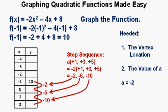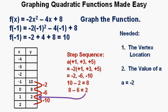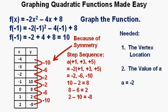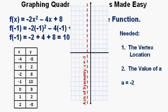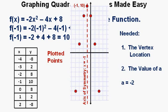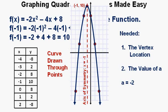Applying the step sequence: 10 minus 2 equals 8, 8 minus 6 equals 2, and 2 minus 10 equals negative 8. Because of symmetry, the sequence of negative 2, negative 6, negative 10 applies on the other reflected side as well, giving outputs of 8, 2, and negative 8. We draw in our axis of symmetry at x equals negative 1, plot the vertex at (negative 1, 10), plot the other 6 points, and draw the curve. We label the curve f of x equals negative 2x squared minus 4x plus 8.